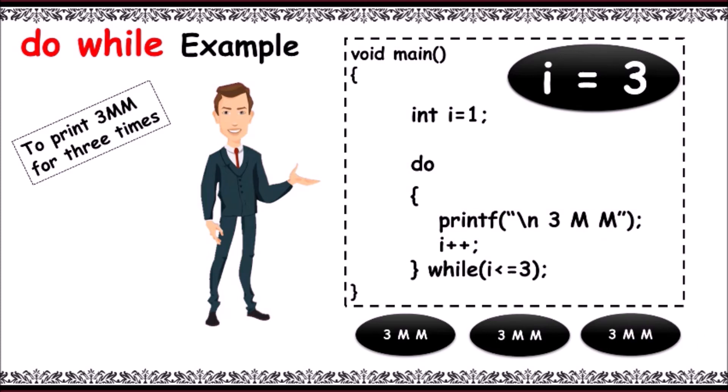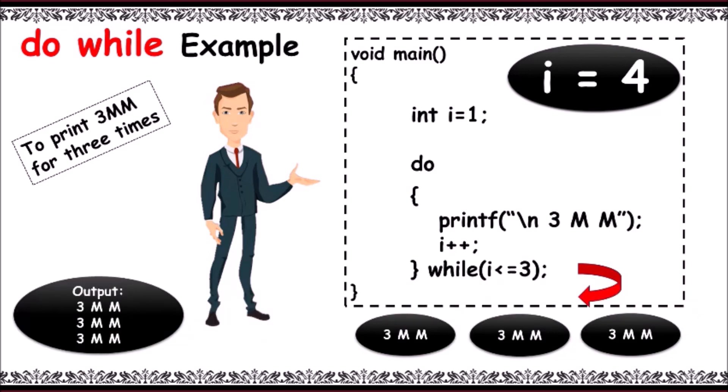And now i is further incremented. Now i value is equal to four. At the end it checks the condition i less than or equal to three, that is four less than or equal to three. As the condition is false, control comes out of the loop. And the output will be printed with 3MM for three times.